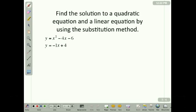So we're going to start by trying to use these two equations using the substitution method to solve. We have two equations: y equals x squared minus 4x minus 6, which is a parabola, and y equals negative 1x plus 4. What I want to do is substitute my y with this given value, so I'm going to rewrite the equation: negative 1x plus 4 equals x squared minus 4x minus 6.